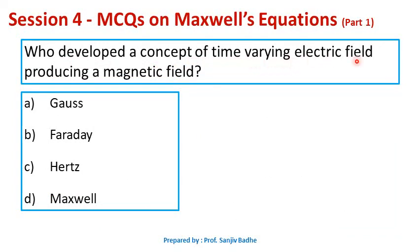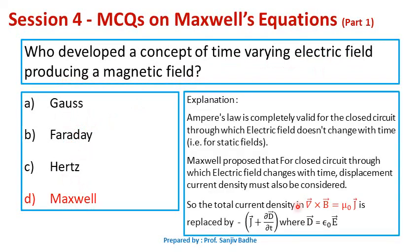Who developed the concept of a time-varying electric field producing a magnetic field? The options are Gauss, Faraday, Hertz, and Maxwell. Maxwell wrote his fourth equation curl of B bar equals mu naught J bar for Ampere's law, which is valid for static fields. For time-varying electric fields, Maxwell introduced the displacement current density, modifying the equation to curl of B bar equals mu naught (J bar plus del D bar by del t). So option D, Maxwell, is correct.